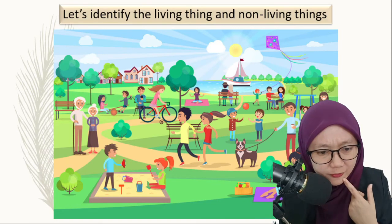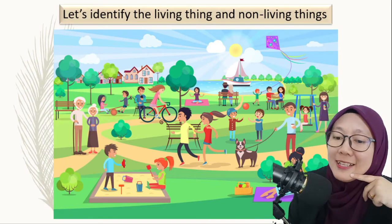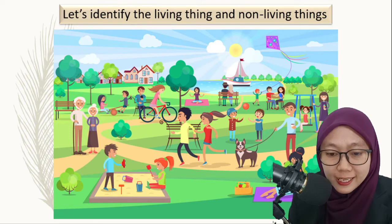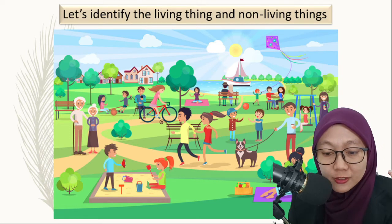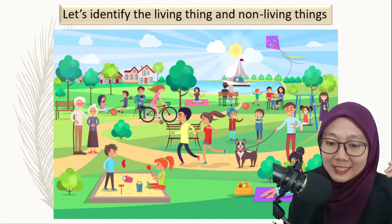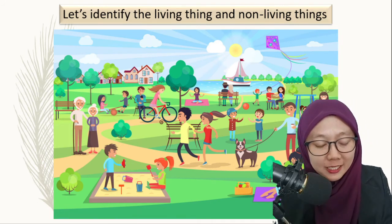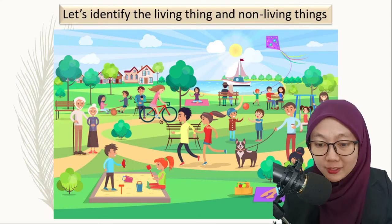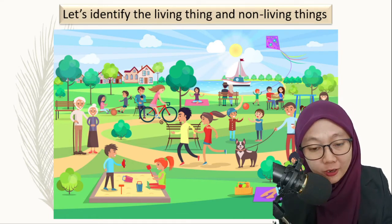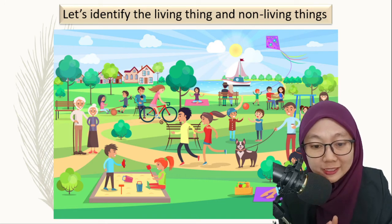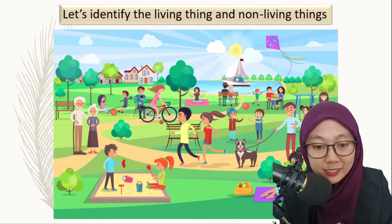Now let's identify the living things and non-living things. You can pause this video and try to list out all the living things and non-living things in this diagram. In this diagram you can see there are a lot of living things and a lot of non-living things. For example, the living things — we have humans, we have the dog, we have the plants, and we have a kid playing.